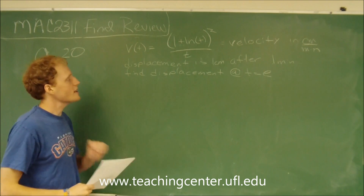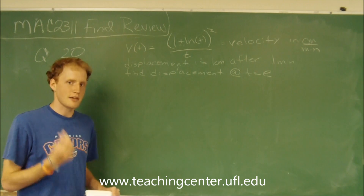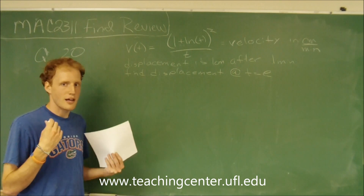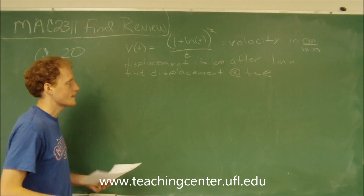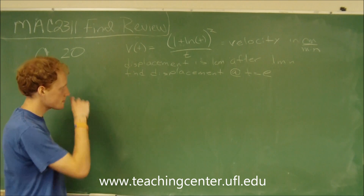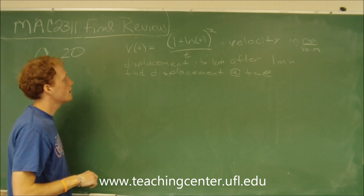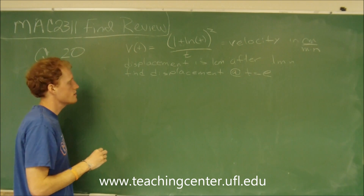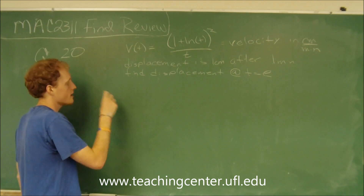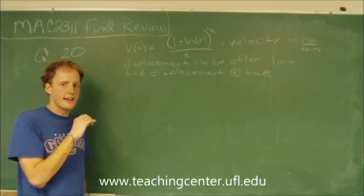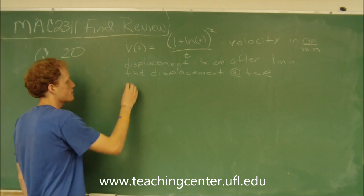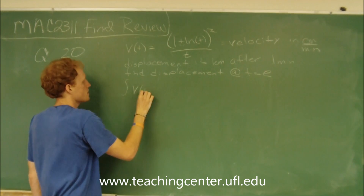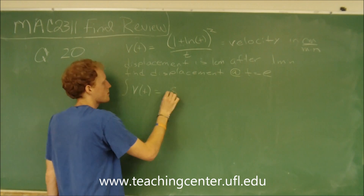To find the displacement, we first need to get the displacement function. The way we get that is by the position function. We know the velocity function, so to get the position function, we need to take the antiderivative of it. The antiderivative of the velocity function equals the position function.